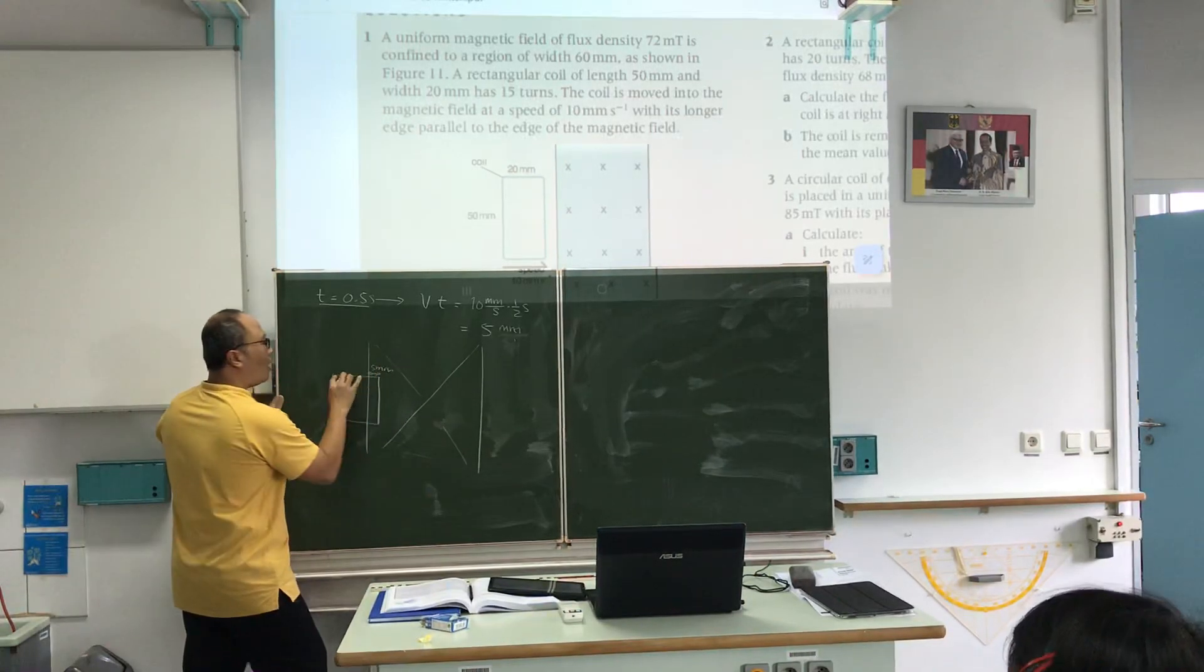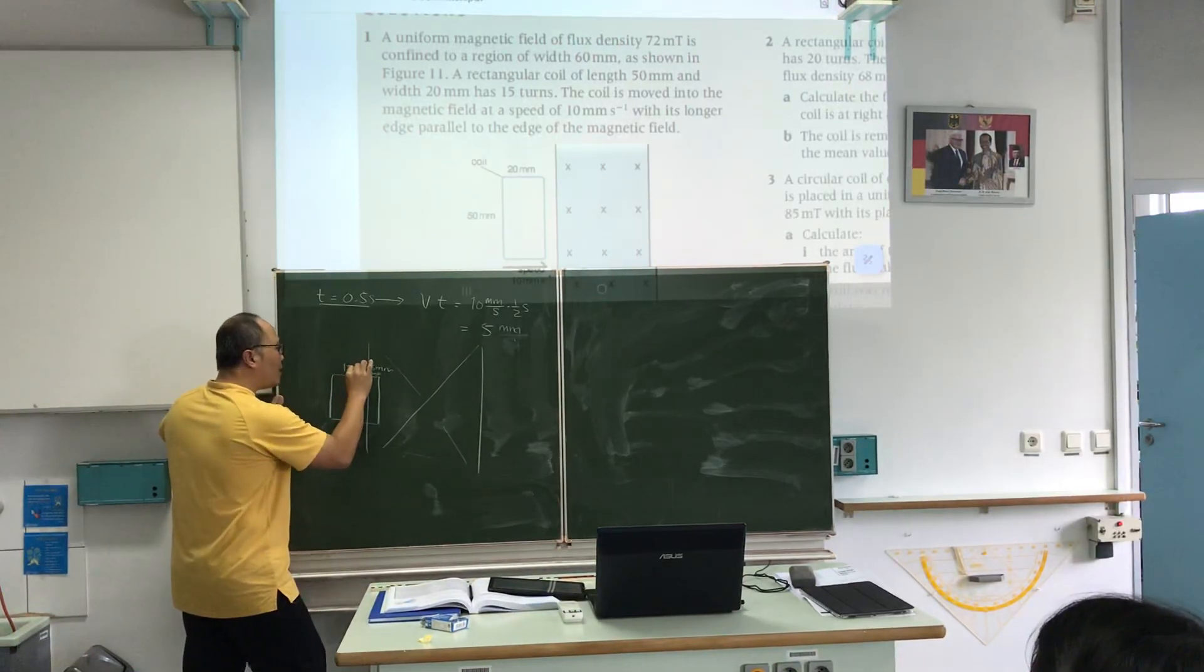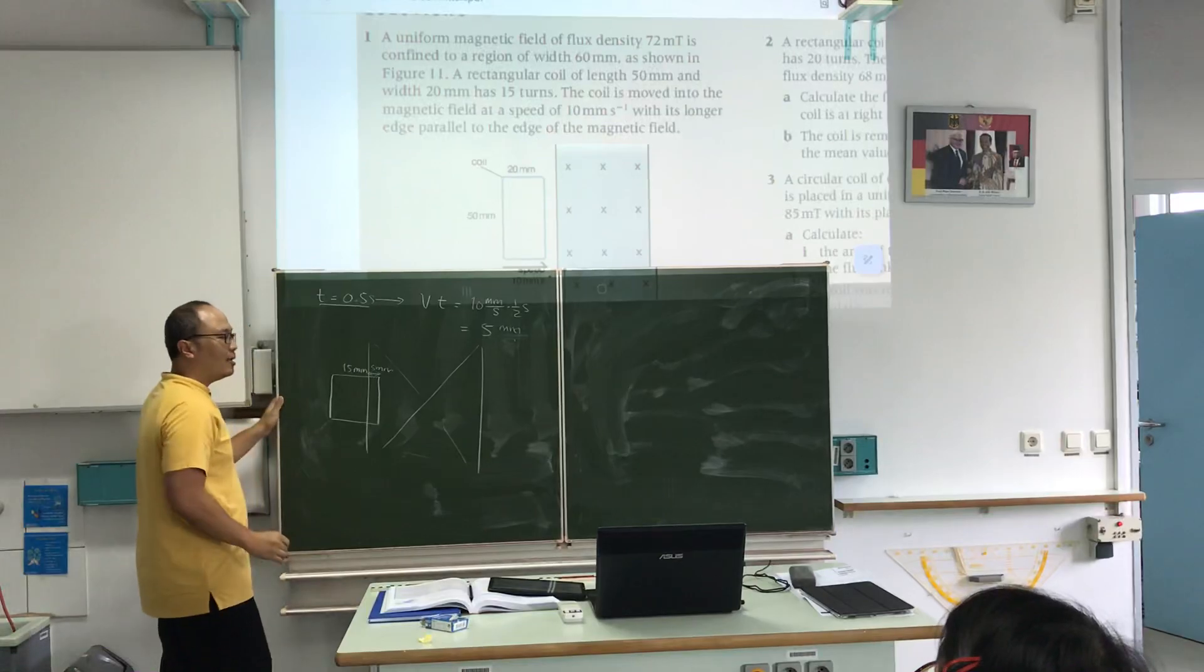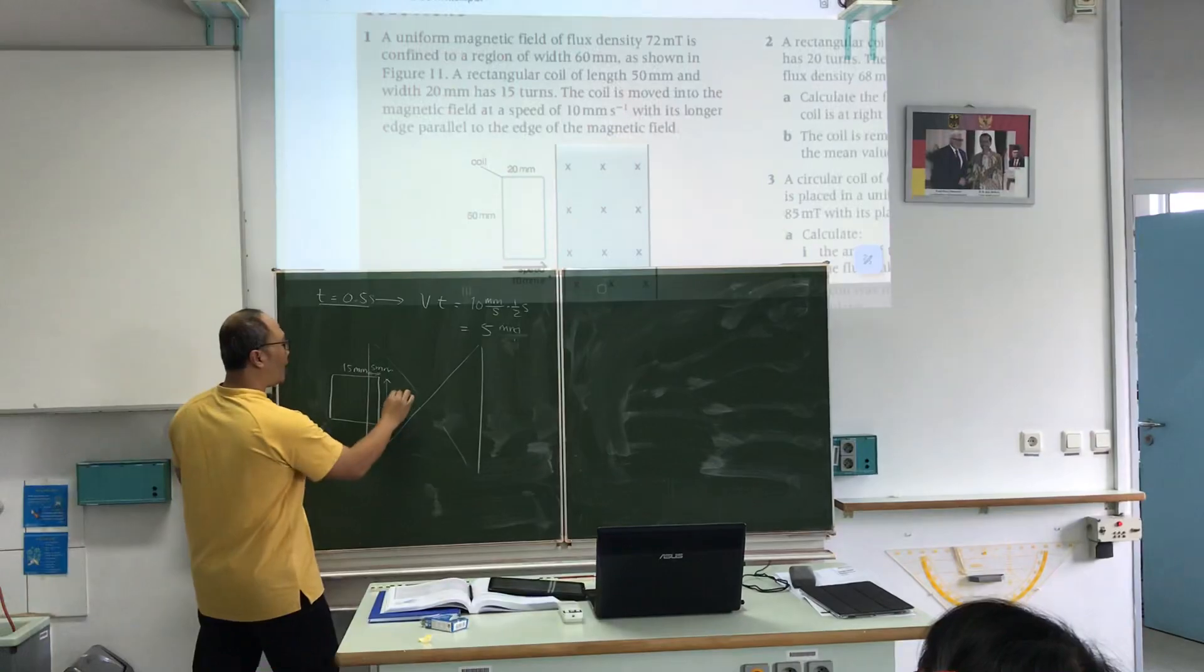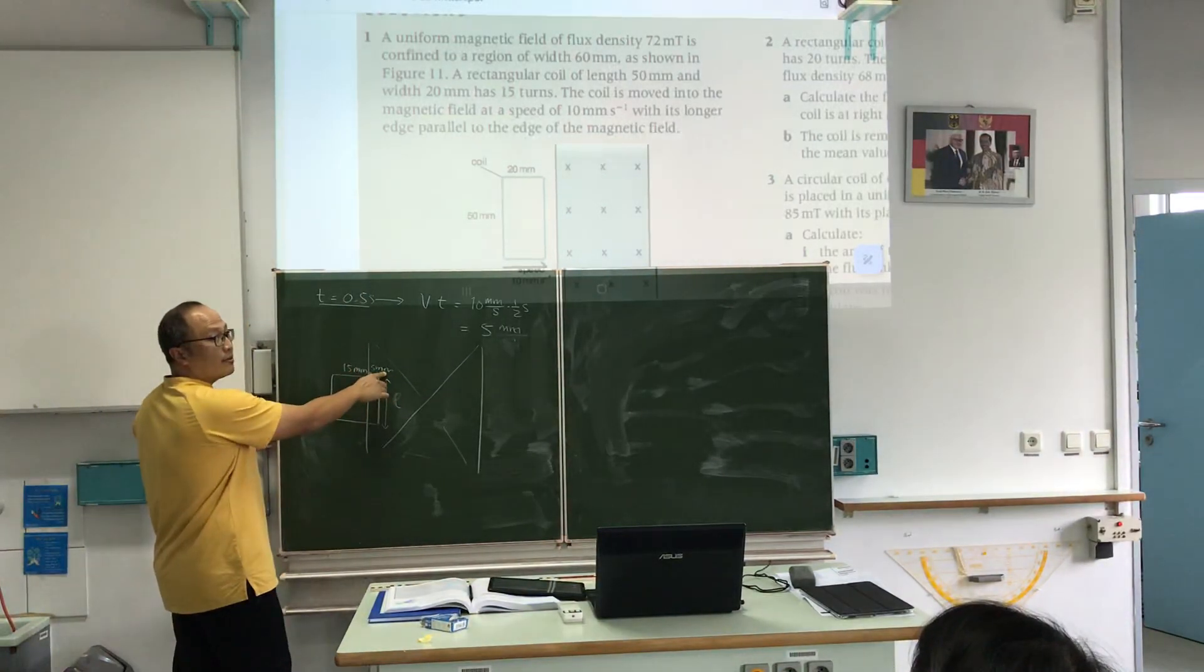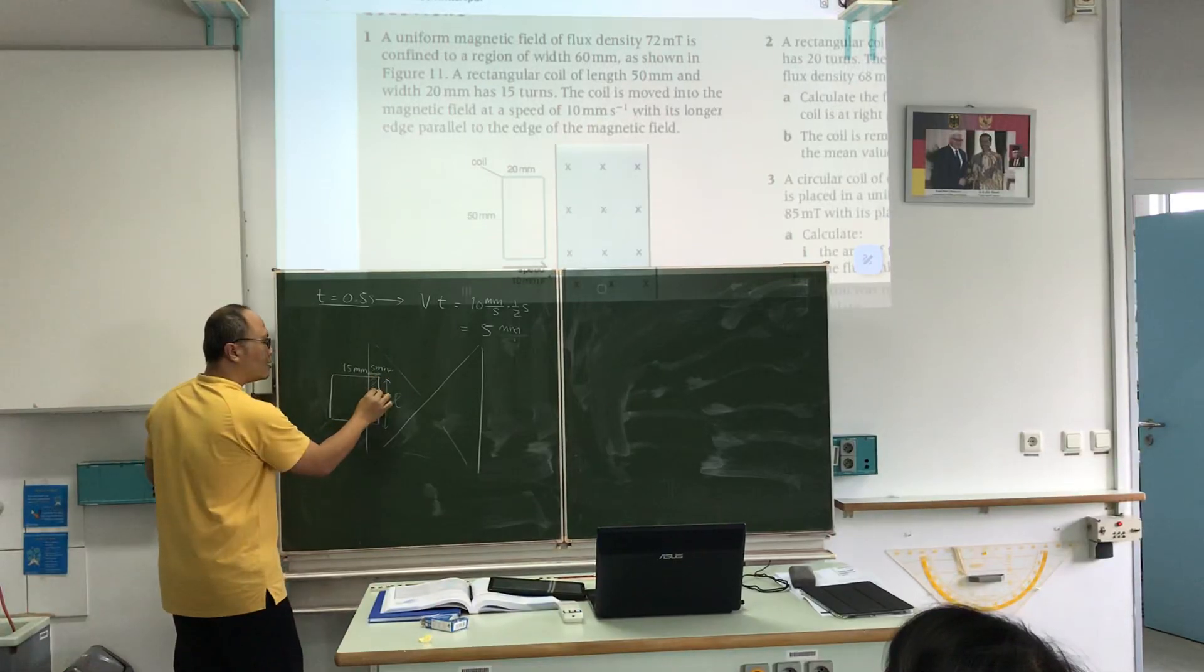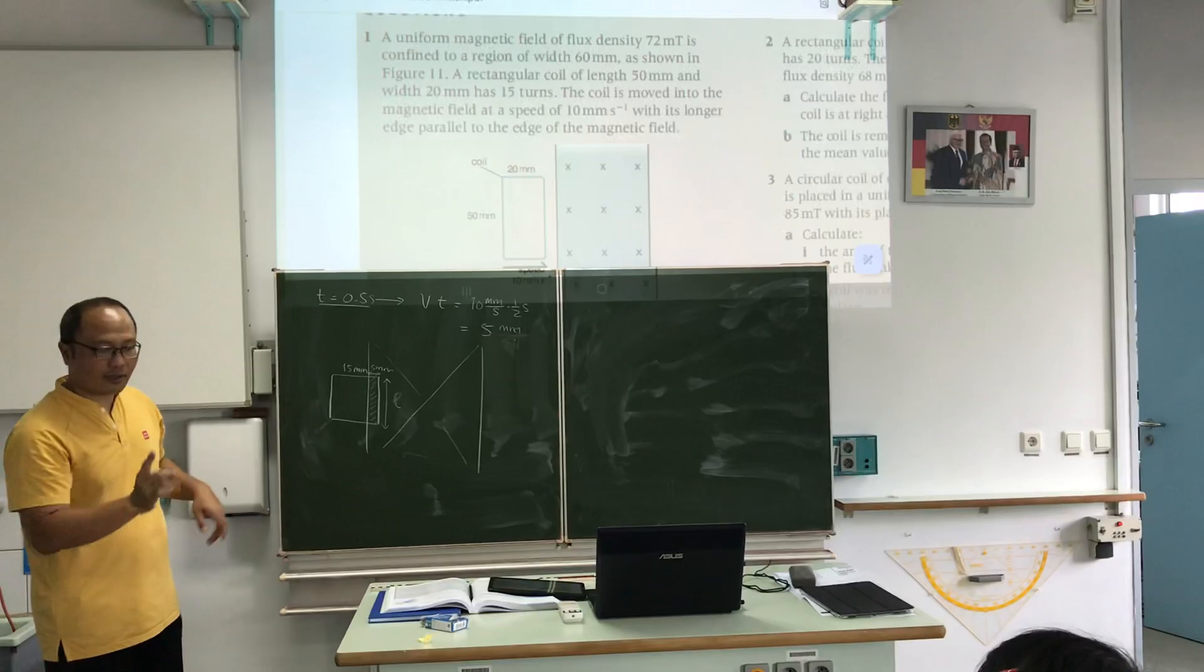And how long is it? 15 millimeter, meaning the area. The area please, length, that's right, the 15 millimeter times 5. Only this? Like 200 millimeter. Correct.